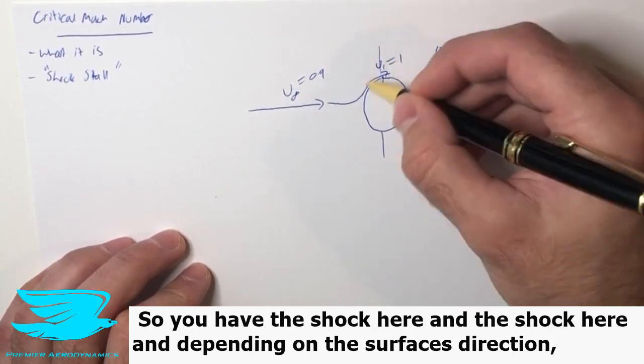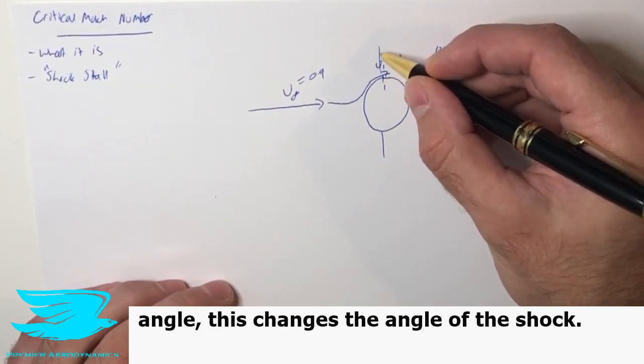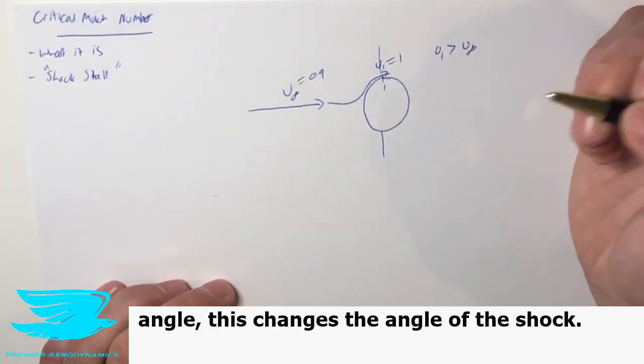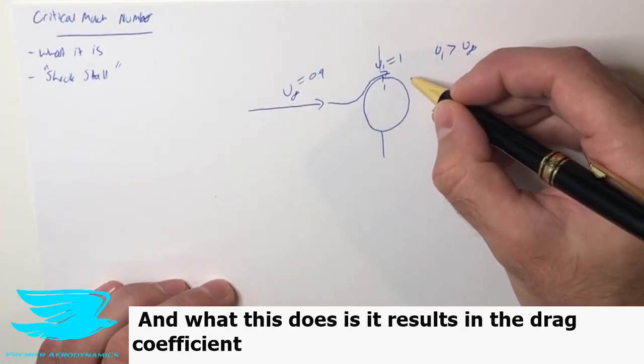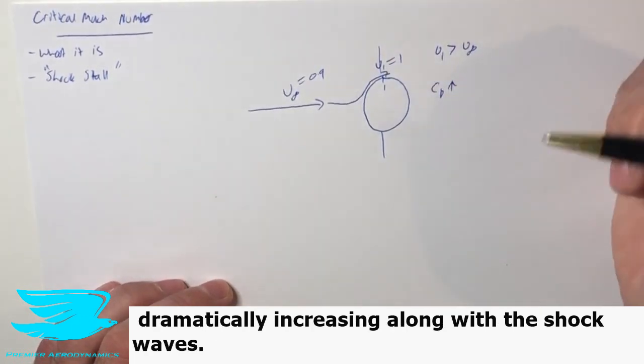So you have a shock here and a shock here, and depending on this surface's direction, angle, this changes the angle of the shock. And what this does is it results in the drag coefficient dramatically increasing along with these shock waves.